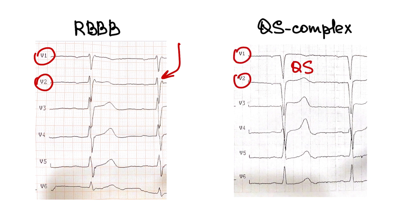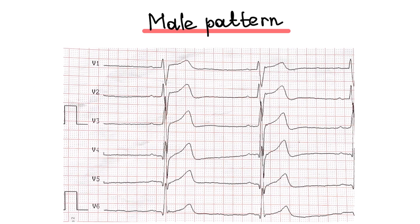Namely, QS complexes at least V1 and V2. Male pattern. Sometimes we can see ST segment elevation from 1 to 3 mm at least from V1 to V3 in healthy young men. It's normal and called the male pattern.